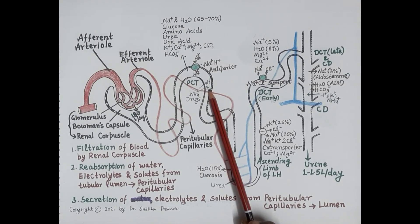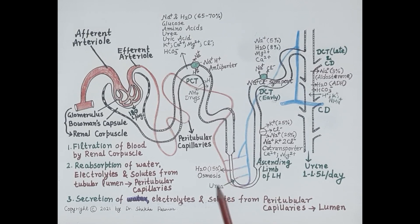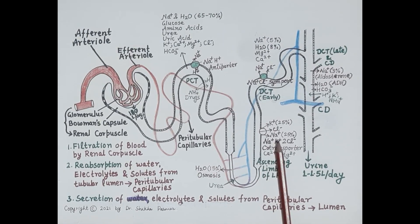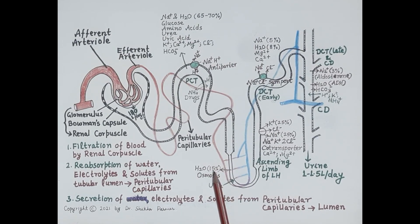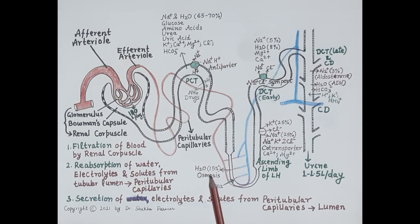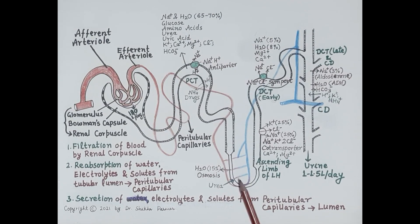The next part of the tubule is the loop of Henle. The descending and ascending limbs of the loop of Henle are highly specialized to reabsorb water and sodium respectively. The thin descending limb is highly permeable to water, with unrestricted movement of water, and around 15 percent of water entering the nephron is reabsorbed into the peritubular capillaries from this segment by the process of osmosis. Urea also freely diffuses into the lumen of the descending limb.